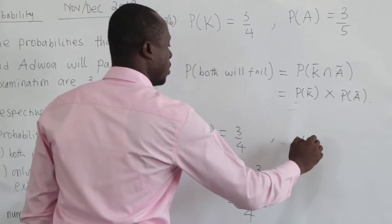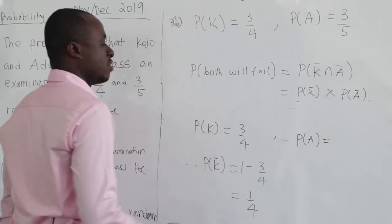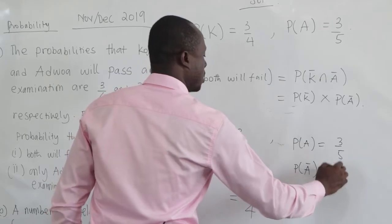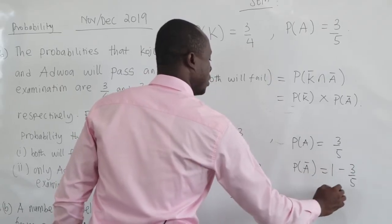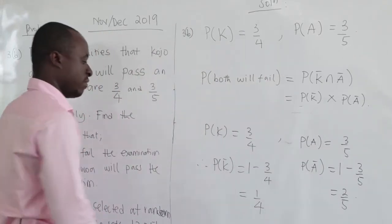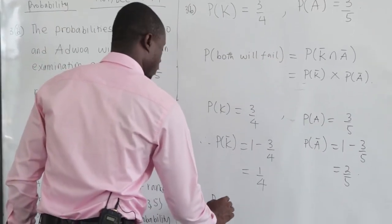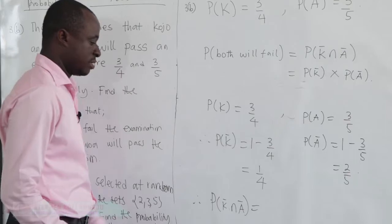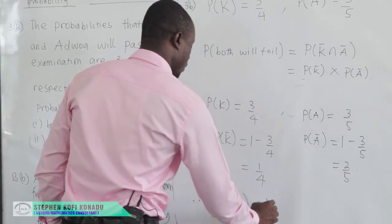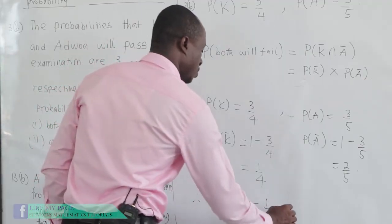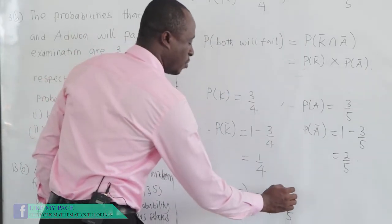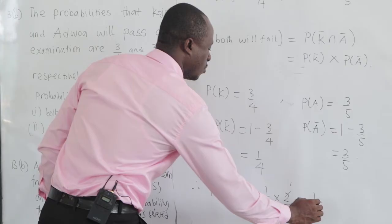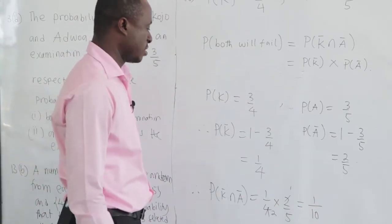We also know that the probability of Ajuwa passing is 3 over 5. Therefore, the probability of Ajuwa not passing is 1 minus 3 over 5, which is 2 over 5. Therefore, the probability that both will fail, that is P of K complement intersection A complement, is P of K complement which is 1 over 4, times P of A complement which is 2 over 5. This gives us 1 over 10.